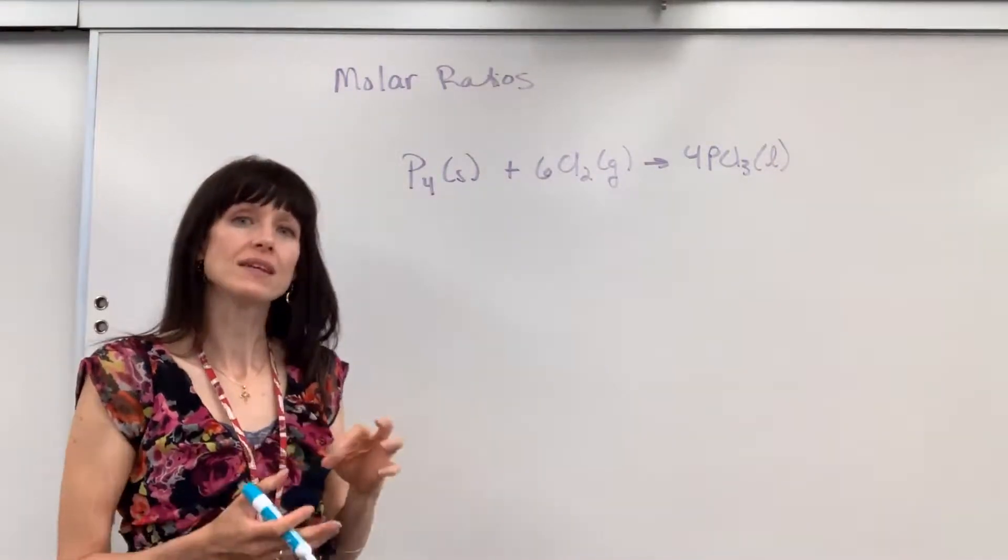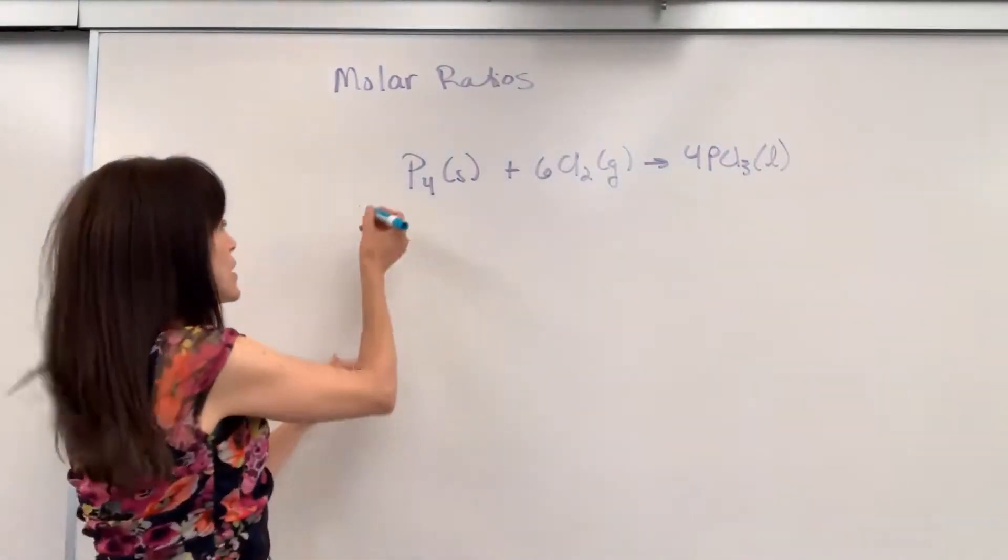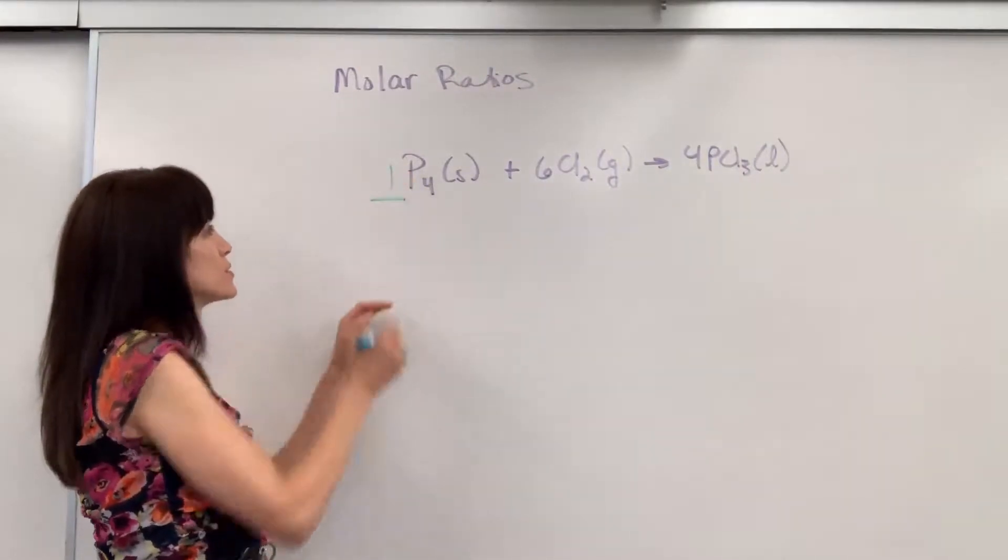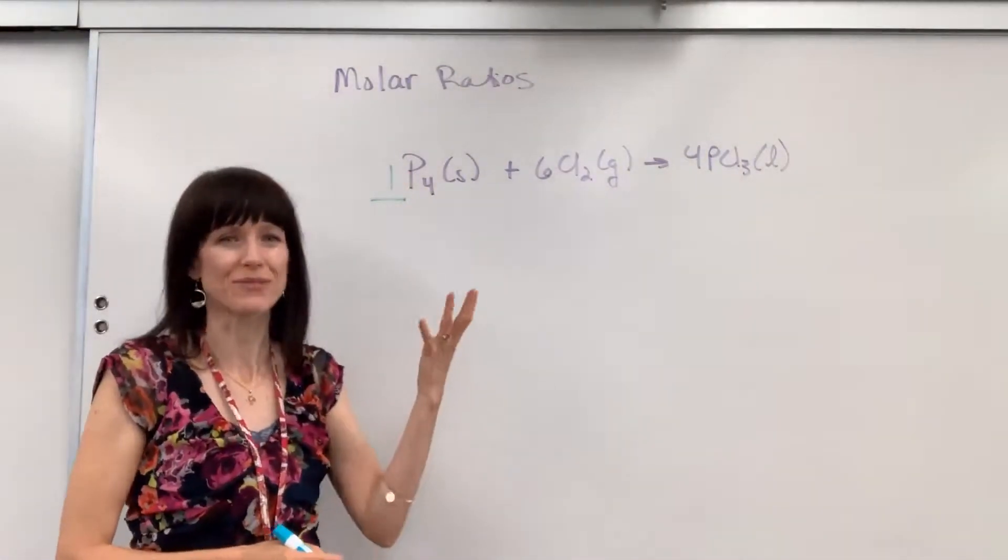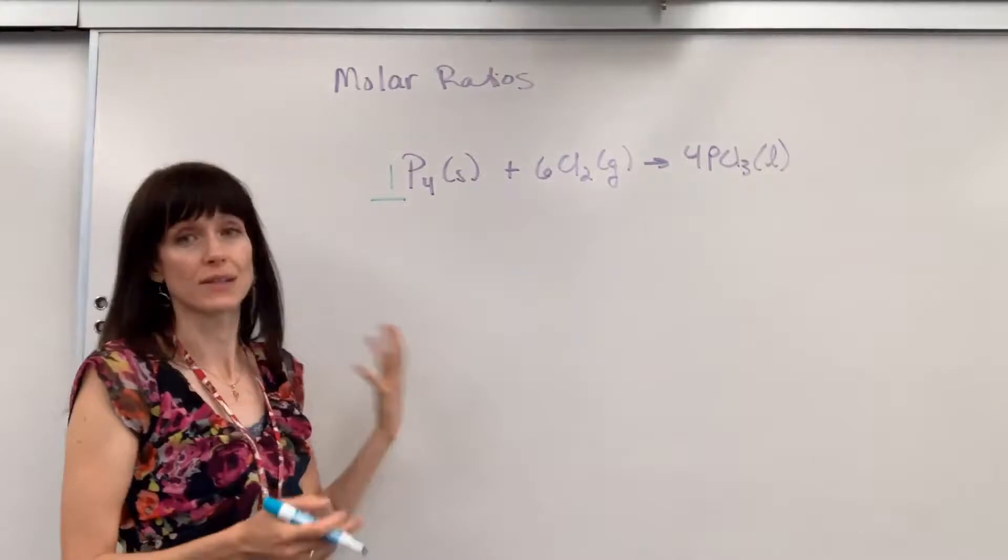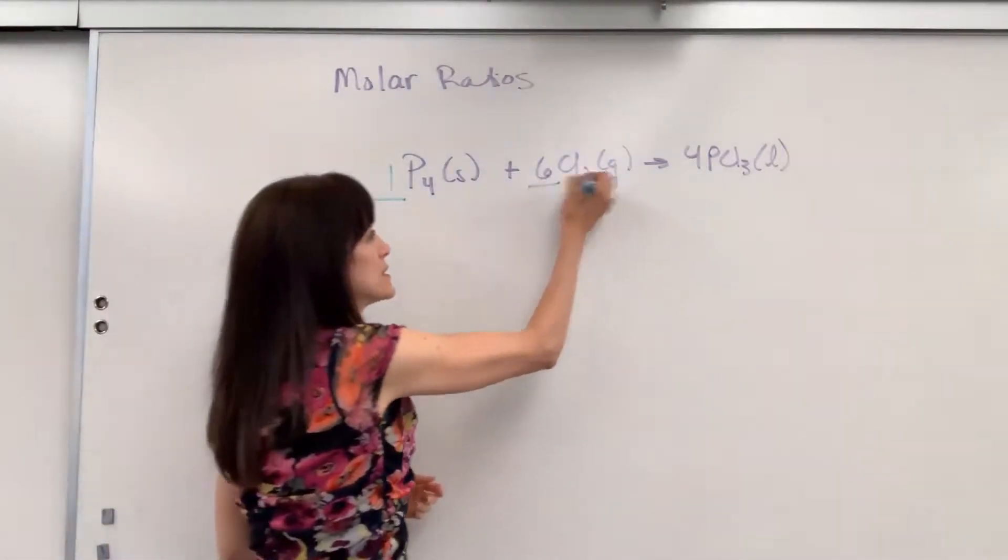Well we can write this as a ratio, as a mathematical ratio. Now remember there's an understood one. If you don't have a number in front of the compound it's understood to be a one. So you have this one, six, and four.